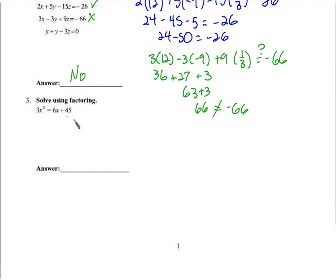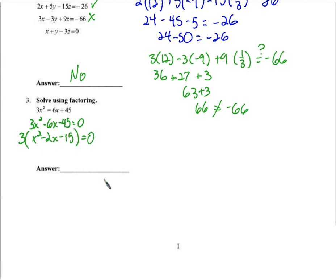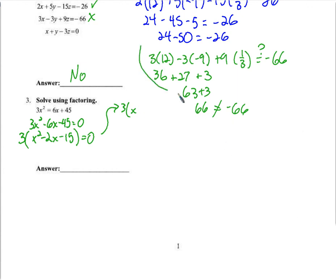Solve using factoring. It's very important that it equals 0 on one side. First, we want to consolidate everything on one side. Now we want to factor it. We're going to factor out the common factor. Then we'll factor this remaining expression. 3 times x squared — I did not want that square.